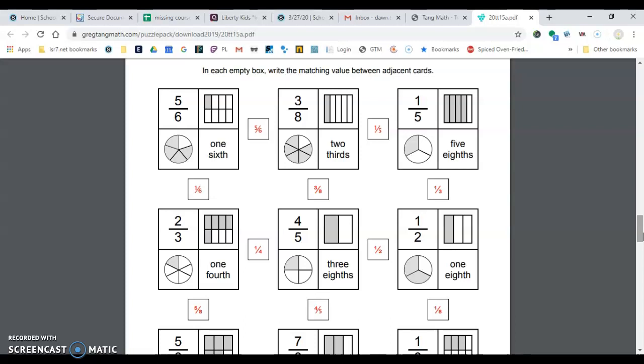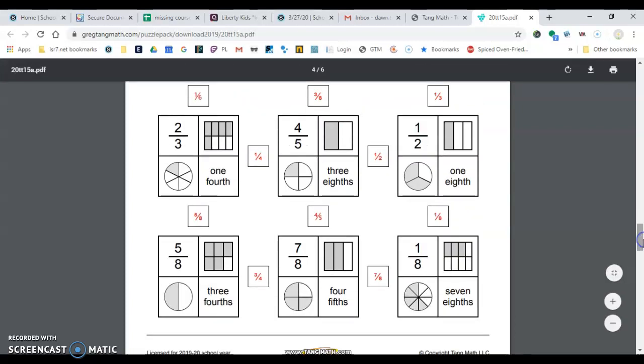Row three, one-fourth, row four is five-eighths, four-fifths, and one-eighth. And the very last row is three-fourths and seven-eighths.